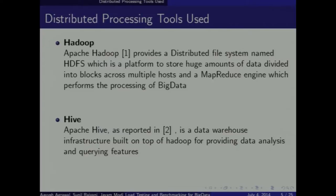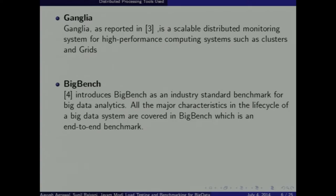Hive is a data warehouse infrastructure built on Hadoop, providing data analysis and querying features. Ganglia is a network monitoring tool which monitors our Hadoop system. Big Bench is used as an industrial benchmark.